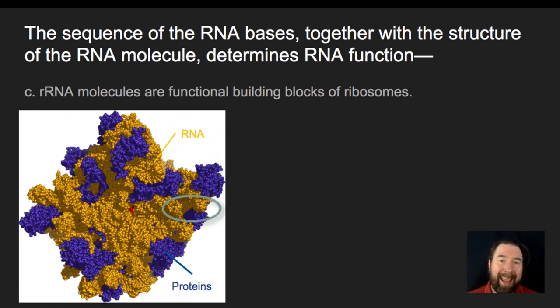and some proteins, and that every different type of organism is going to have a couple of different subunits that are going to come together. And each of those subunits is a combination of RNA molecules and proteins that ultimately provide that structure for the ribosome.